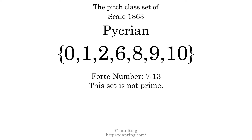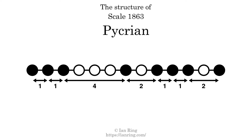The structure of a scale is a description of the interval distance between each successive tone. This scale has a structure of 1, 1, 4, 2, 1, 1, 2.